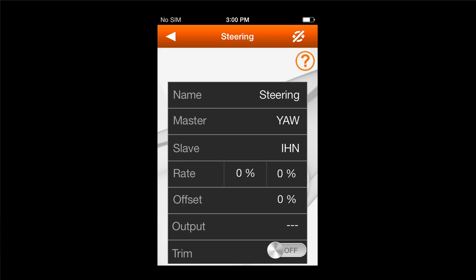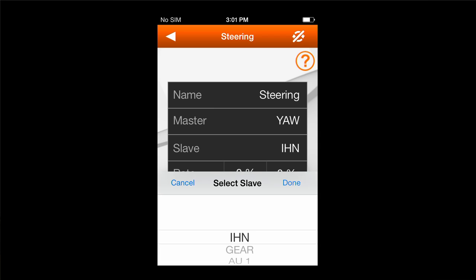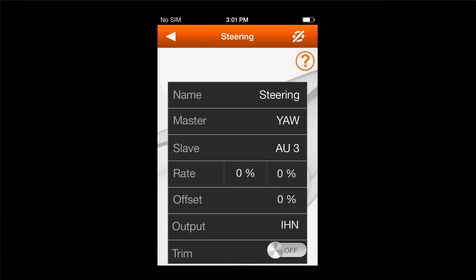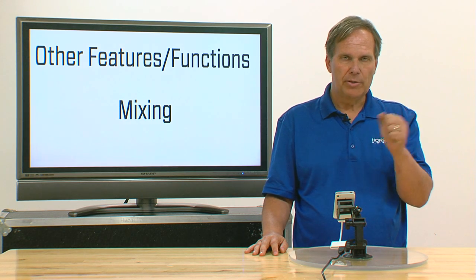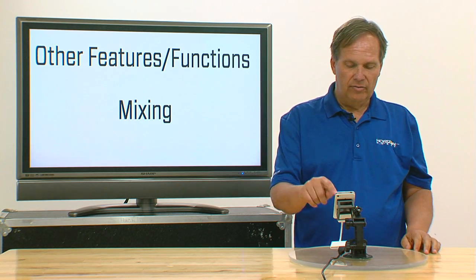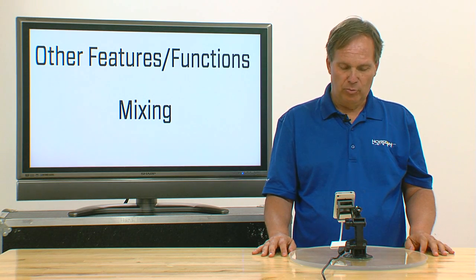The slave, I need to choose an auxiliary channel that's not being used. So in this case, let's say I'm going to use auxiliary three. So now I'm going to be adjusting when I move my rudder channel or my yaw, I'll have a slave channel auxiliary three will move as well.